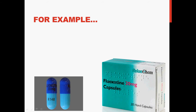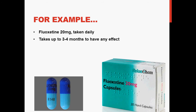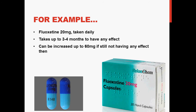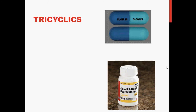One example of an SSRI is fluoxetine, normally given in doses of 20 milligrams taken daily. It takes up to three to four months to have any effect — which is quite significant and a long time in the life of someone with OCD. If it's still not having any effect at that point, the dose can be increased up to 60 milligrams, or a different drug can be tried. This detail is given because you may be presented with an example of someone being treated and asked about their options.